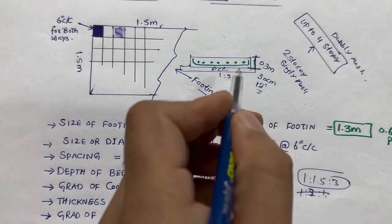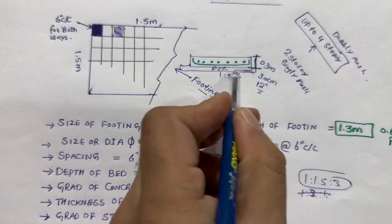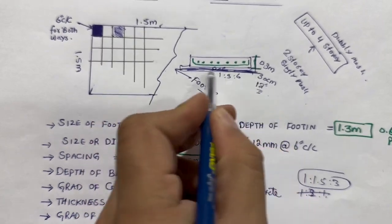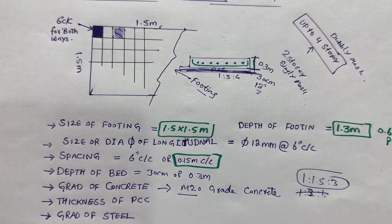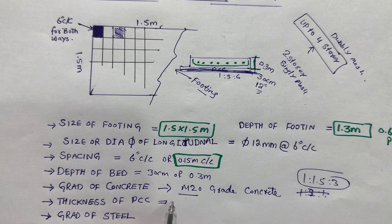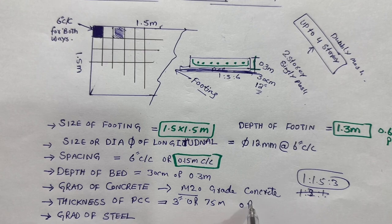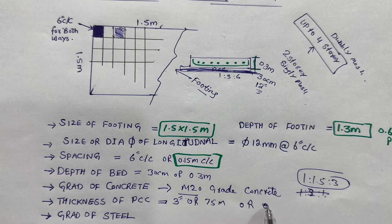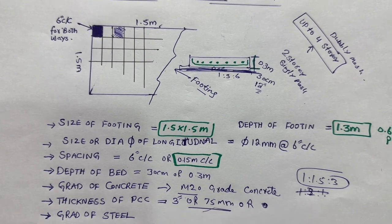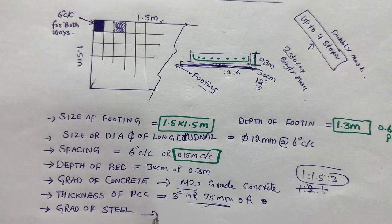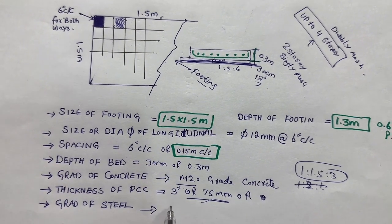Next, the thickness of PCC. Before placing the bed depth, the PCC thickness should not be more than 3 inches, or you can say 75 millimeter. Next, the grade of steel: use 40 grade.